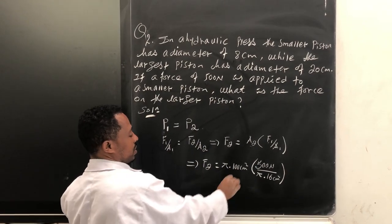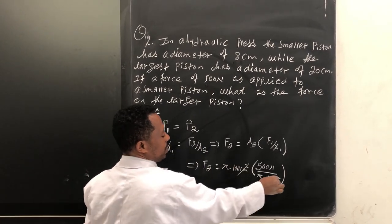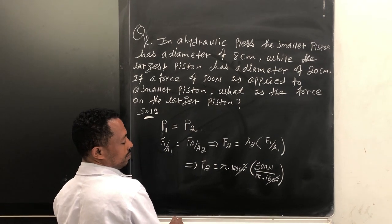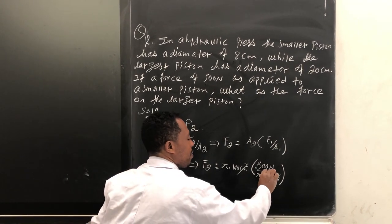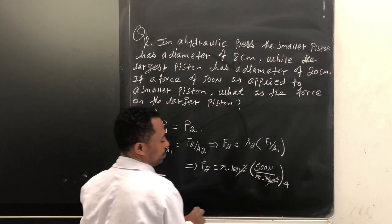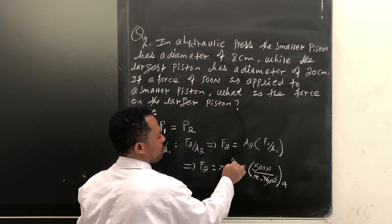Square cm by square cm cancels. Pi by pi cancels. By 16 by 16, 25 times 5.